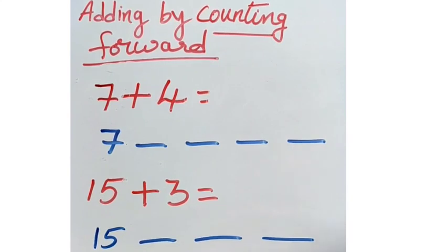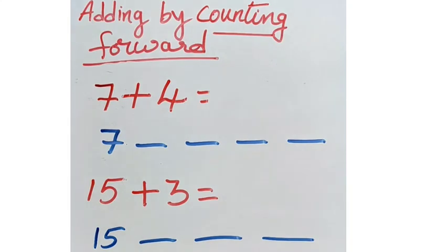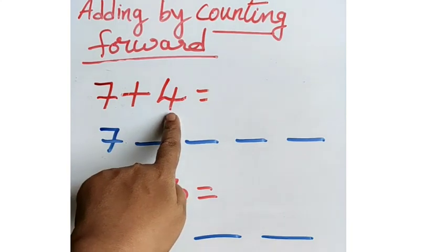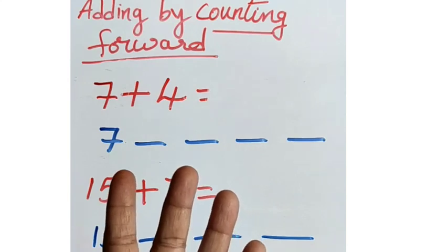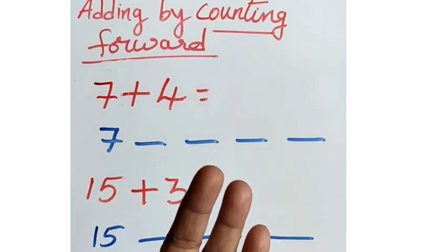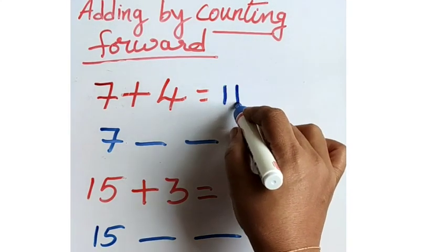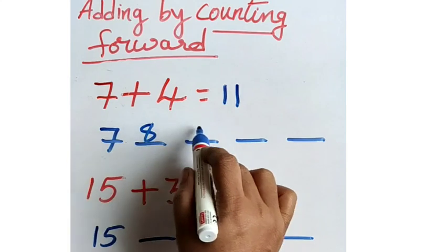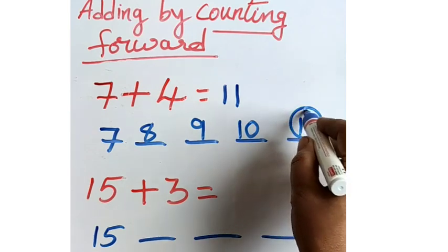We shall add by counting forward. First sum: 7 plus 4. We shall add by stretching out fingers. First number is 7, second number is 4. Stretch out 4 fingers. 7 after — 8, 9, 10, 11. Write down: 7 plus 4 equal to 11.